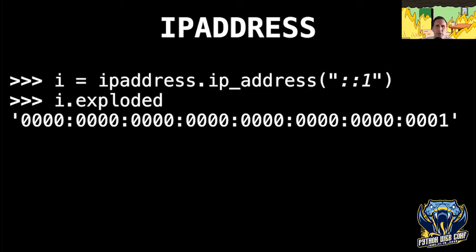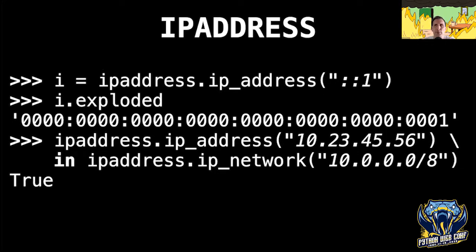Another example of something that is terrible as a string: IP addresses, especially IPv6. Do you know all the normalization rules for IPv6 addresses? I certainly don't. How about checking if an address is part of a network? Even in simple cases it's terrible to use strings for these checks. The ipaddress module has been in Python since Python 3.3 — which is basically prehistoric.